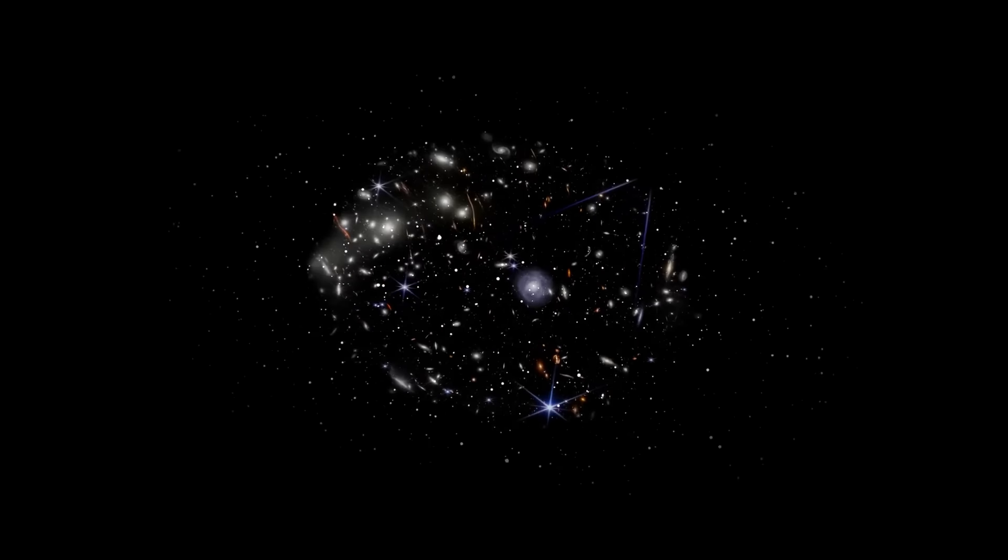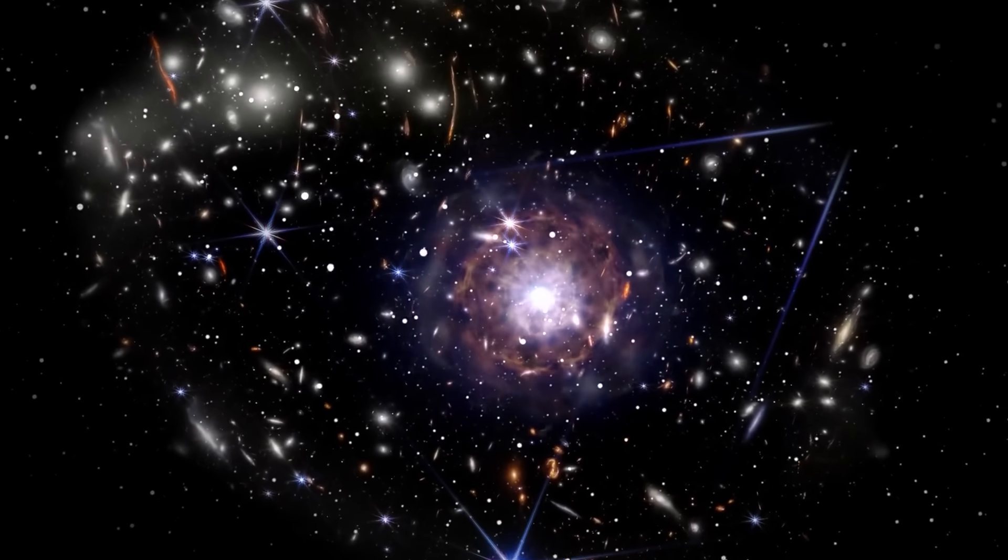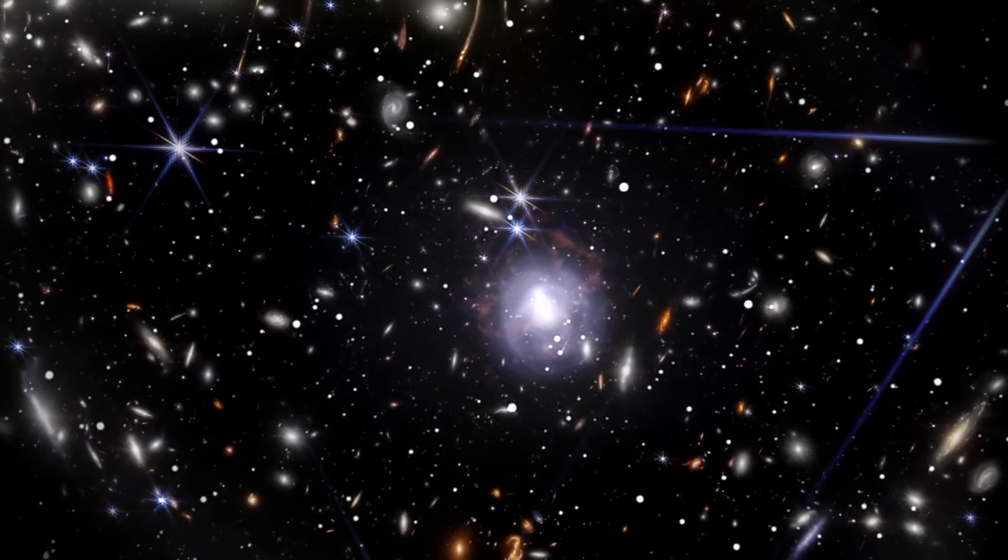Beyond asteroids and stars, Rubin is also searching for something deeper, the invisible scaffolding of the universe known as dark matter. By measuring how light bends around unseen mass, Rubin will map this invisible material with new precision. And by tracking how galaxies drift apart over time, it will help scientists understand the mysterious force of dark energy.